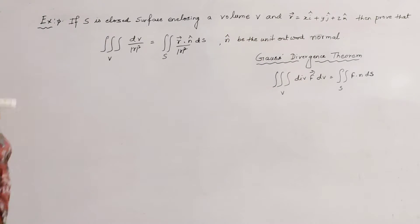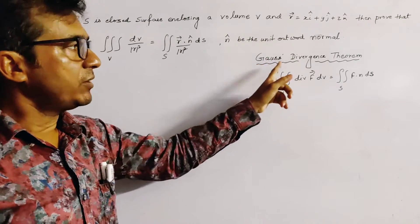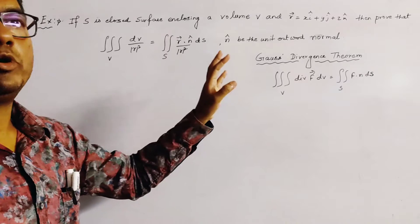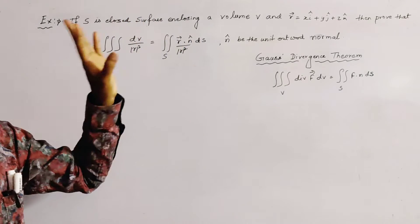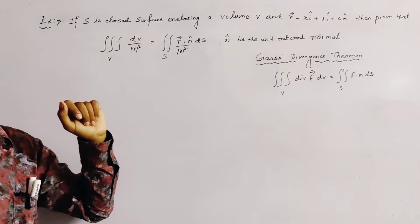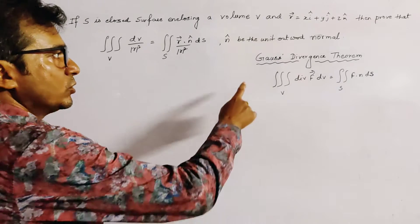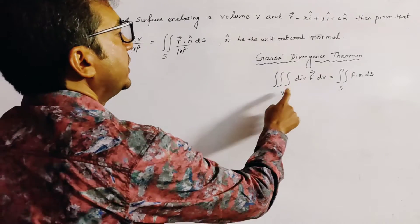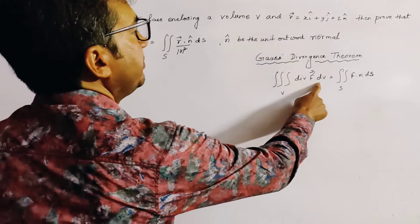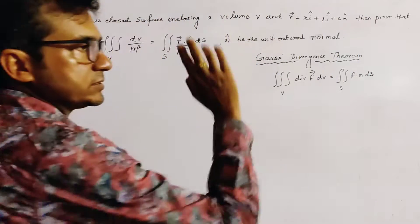To prove this transformation we use Gauss's Divergence Theorem, which is a very important and essential theorem of integral transformation in vector calculus. Gauss's Divergence Theorem states that triple integration over V of div(F) dV equals double integration over S of F·n̂ dS.